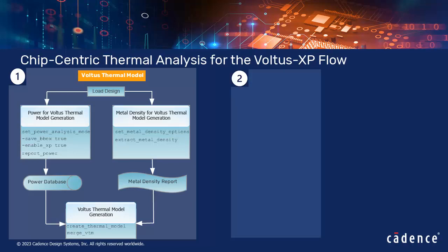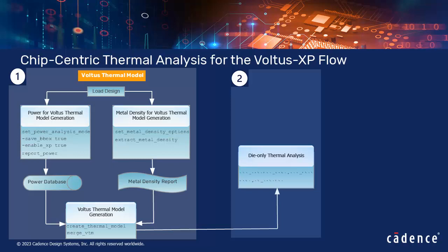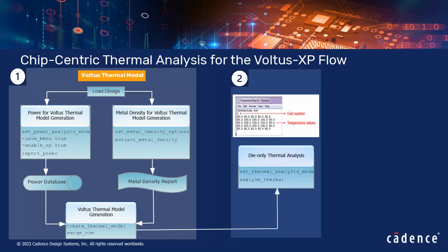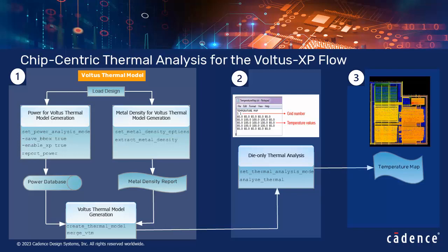The second step is to perform die-only thermal analysis. The temperature map per die is produced for the Voltus solution to perform thermal-aware sign-off. In the third step, you can use the temperature map generated by Celsius to run Voltus thermal-aware power, IR, and EM analysis.